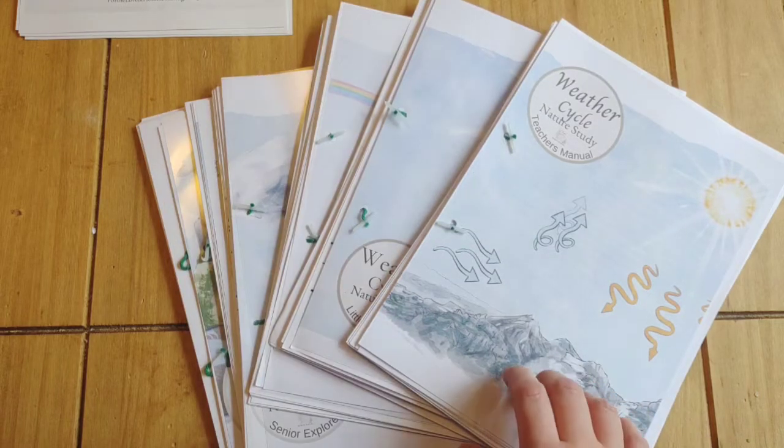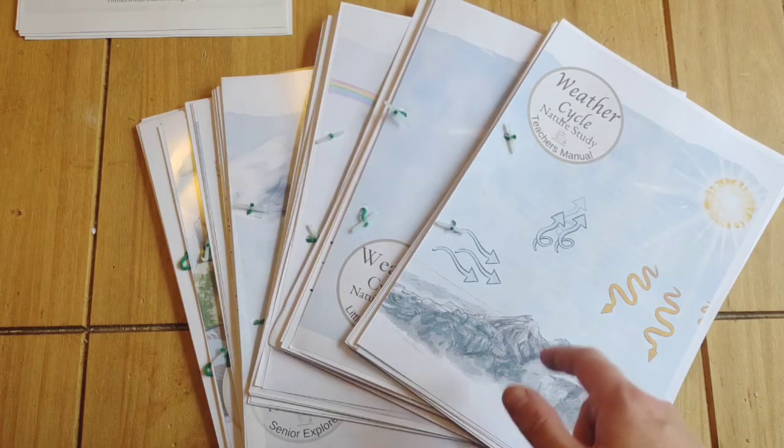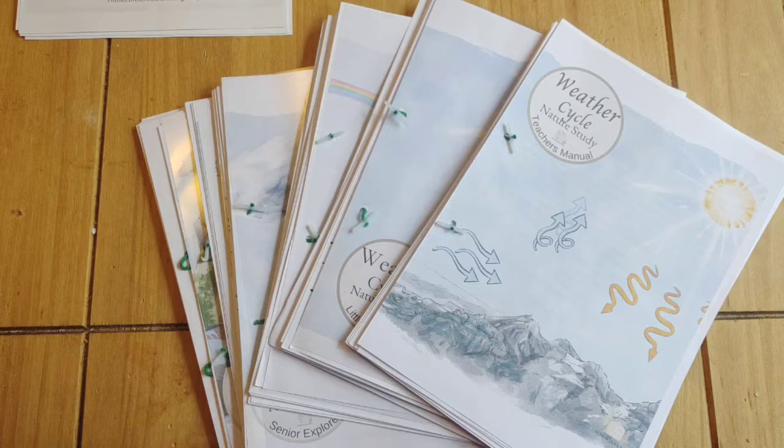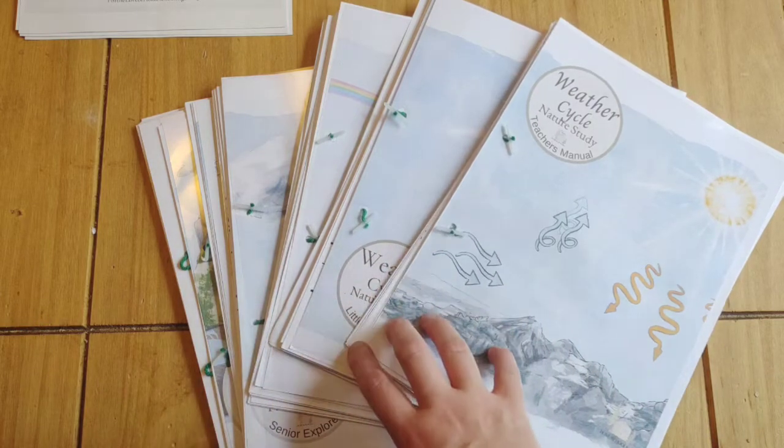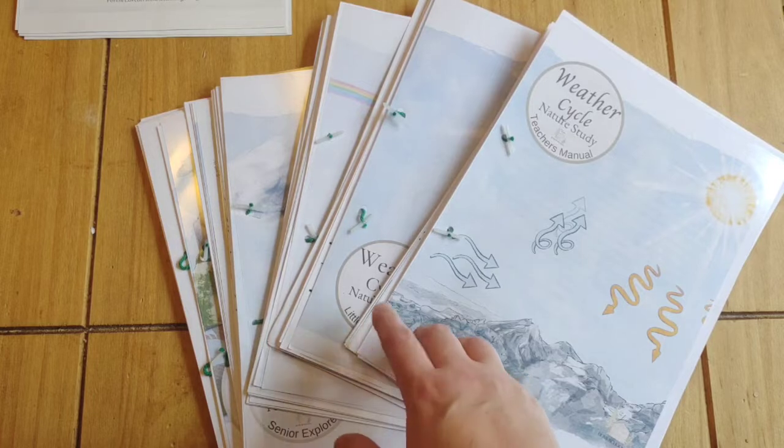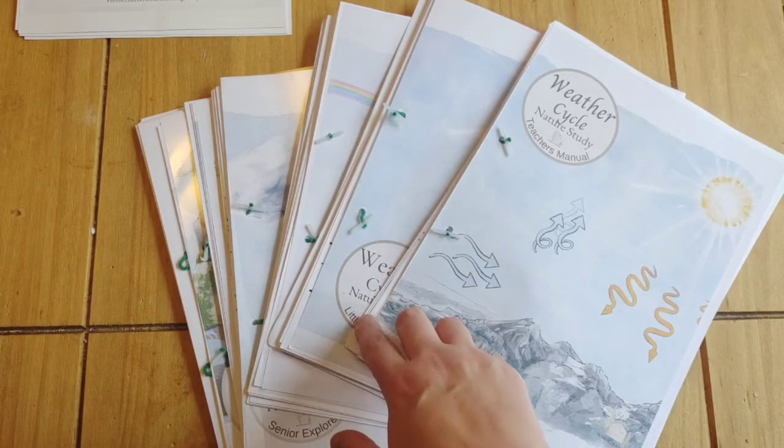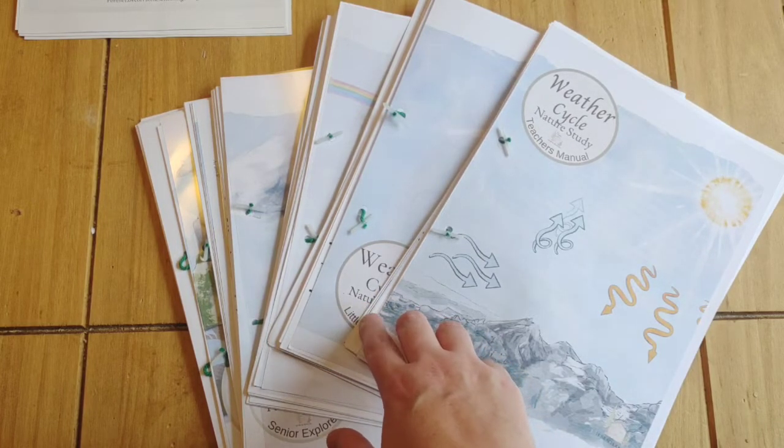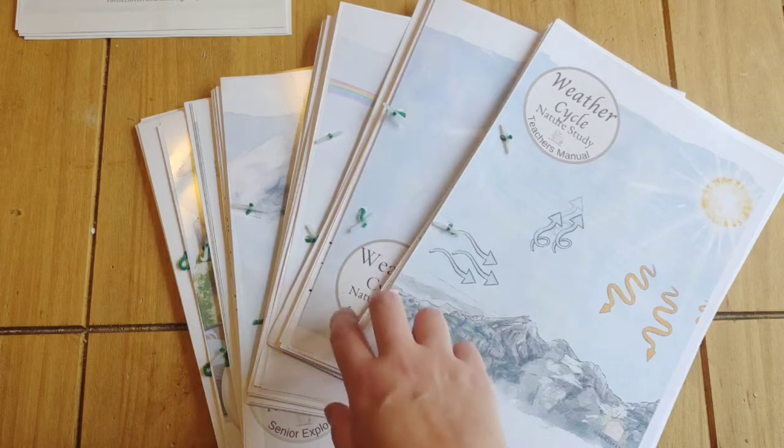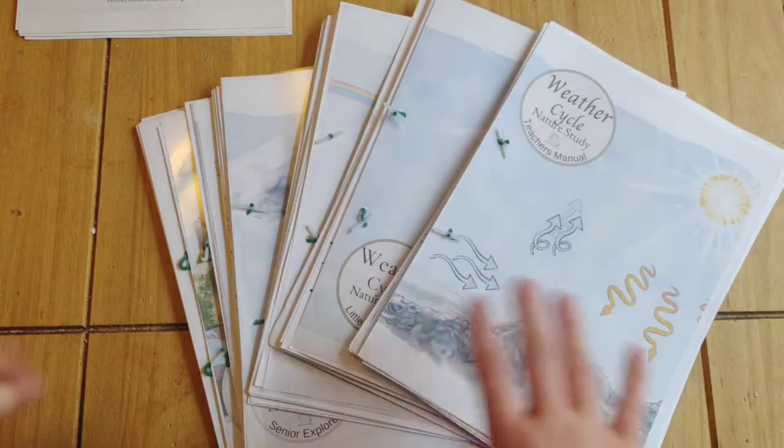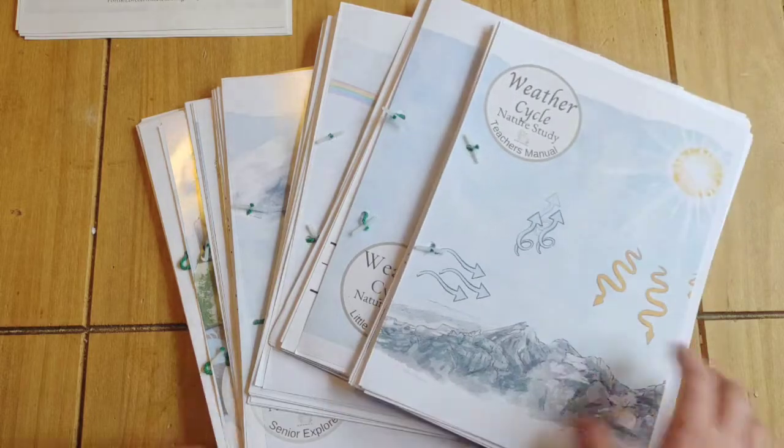The topic for September is insects, and we've just done a whole lot of stuff on insects. So what I thought I would do is print the weather one, and we'll do that in September. And then I think it's trees for October, and we're going to do that one as well. I've got it all ready to go, and I'll give you a quick look inside.